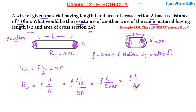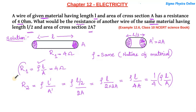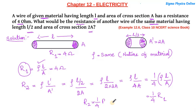This gives us ρl / (2 × 2a) = ρl / 4a, which we can write as (1/4) × (ρl/a). Now, ρl/a is nothing but R1 — the resistance of the original wire. So we get R2 = (1/4) × R1. That is, the new resistance will be one-fourth of the original resistance.